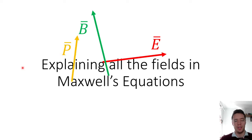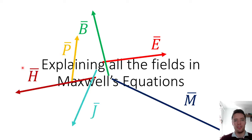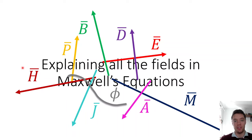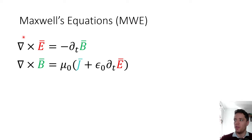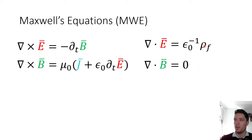Hello and welcome to a quick video where I'm going to explain all the different fields that arise in Maxwell's equations and give you an intuitive understanding of how they work and why you should care about them. You may have seen Maxwell's equations written in a form which relates the E field to the B field, as well as to any charge densities and current densities that may be present.